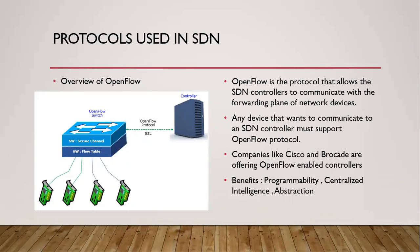The main protocol used in SDN is OpenFlow. OpenFlow is the protocol that allows the SDN controller to communicate with the forwarding plane of the network devices, and any device that wants to communicate with the SDN controller must support the OpenFlow protocol. Please remember that the device should have OpenFlow protocol, otherwise you cannot make an SDN network within any company or firm. Companies like Cisco and Brocade are offering OpenFlow-enabled controllers, and the benefits include centralized intelligence and abstraction.